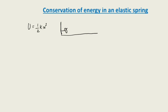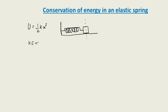Let's see the diagram here. A spring is connected and fixed at one end, and the other end is connected to a mass kept on a frictionless surface. Now we are discussing the conservation of energy — mechanical energy, specifically kinetic energy plus potential energy, remains constant.